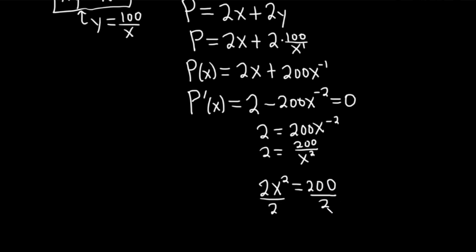That gives us, I'm going to come over here because we have all this room, x squared equals 100, take the square root of both sides, and we get x equals plus or minus 10.